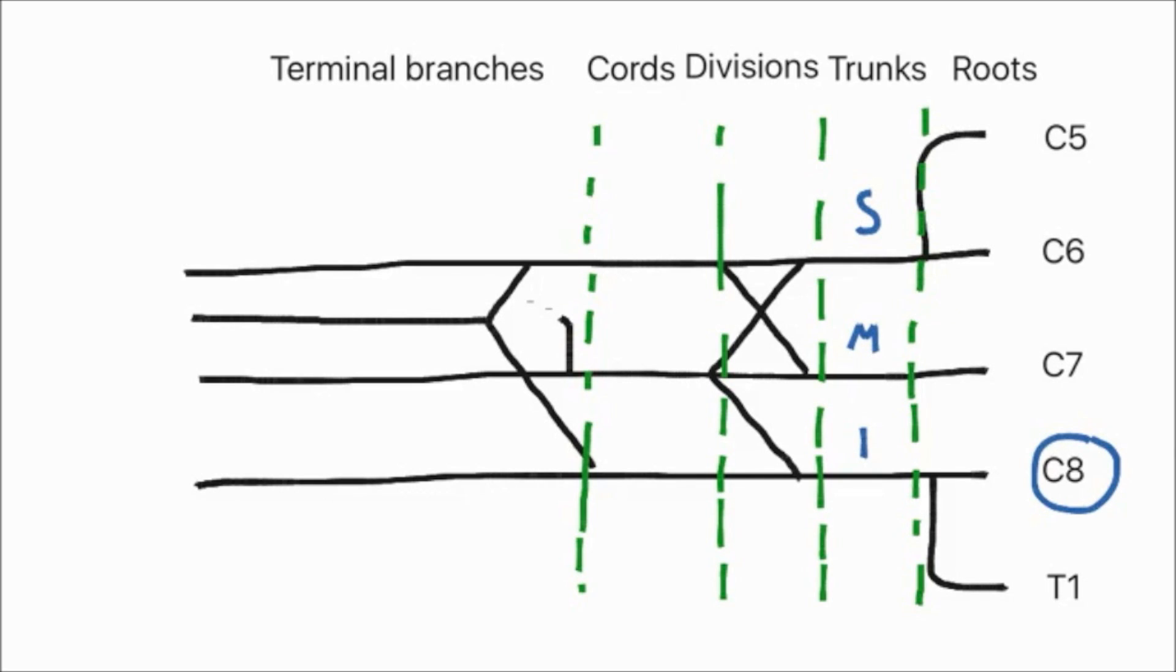The divisions at first look complicated, but they are not. All three trunks send projections posteriorly to form a new nerve. At the same time, the middle trunk sends an anterior projection to form this amalgamation. All this crossing over leads to the formation of the three cords. The lateral cord is formed as we just described, and the posterior cord is similar. The medial cord is here.